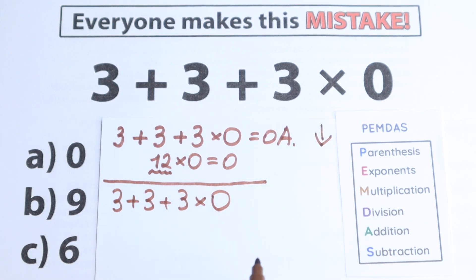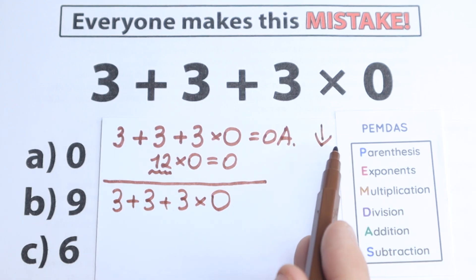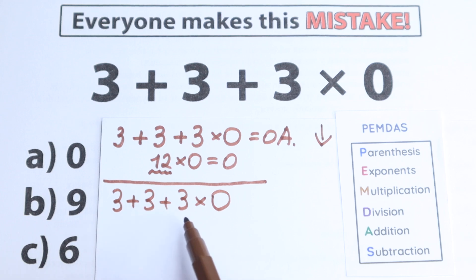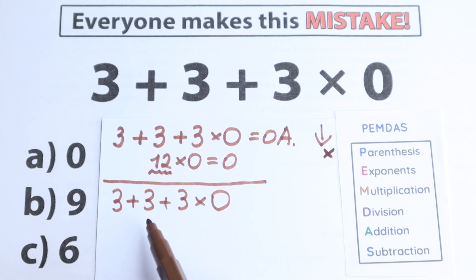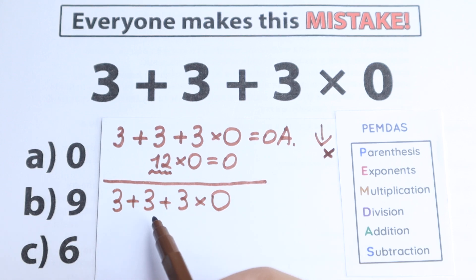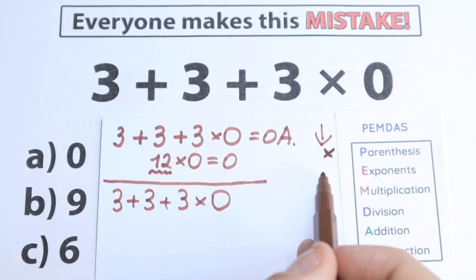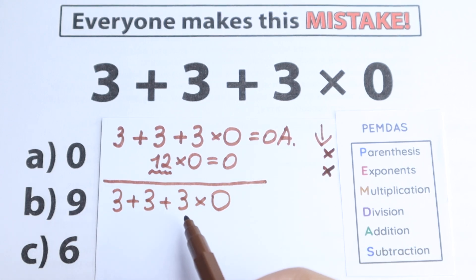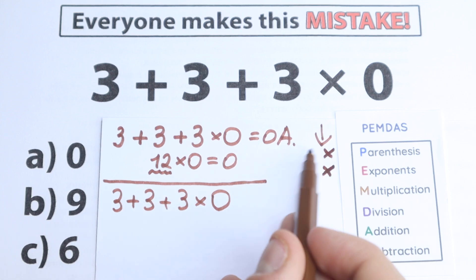PEMDAS works from the top to the bottom, so let's go to the first step: Parentheses. Where do we have parentheses right here? We don't see any — we don't have any parentheses, which is really great. We just skip this part. Next step: Exponents. Are there any exponents? No — no squares, cubes, or powers — so we can skip these two steps, which is great because with parentheses and exponents the question would be more complicated.